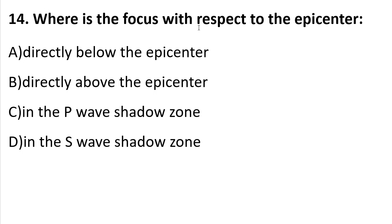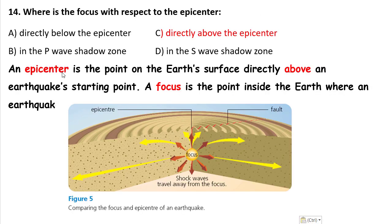Question 14: Where is the focus with respect to the epicenter? A) Directly below the epicenter, B) Directly above the epicenter, C) In the P wave shadow zone, D) In the S wave shadow zone. The epicenter is the point on the Earth's surface directly above an earthquake's starting point, which is the focus. A focus is the point inside the Earth where an earthquake starts. So the focus is directly below the epicenter — the answer will be A.